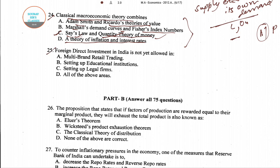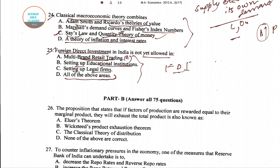For question number 25, the last question: foreign direct investment (FDI) in India is not yet allowed in — four options: multi-brand retail trading, setting up an educational institution, setting up legal forms, all of the above. Option A is the right answer: multi-brand retail trading is not allowed for foreign direct investment in India.